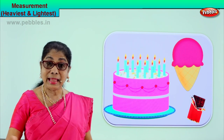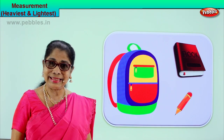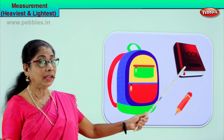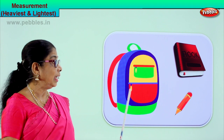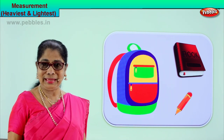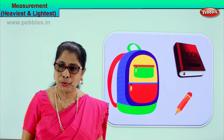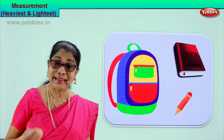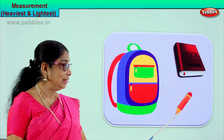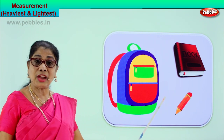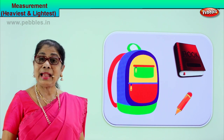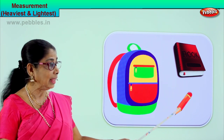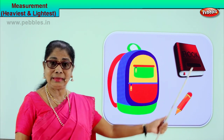Now let's look at another exercise. Observe and compare, and you tell me the heaviest and the lightest. Look carefully, observe. Tell me what we have here. We have a small pencil, a notebook, a book, a small diary and you have a school bag. Your school bag, pencil and the book. In these three items, you tell me which will be the lightest of the three? The pencil will be the lightest of the three objects. And the heaviest — your school bag will be the heaviest.